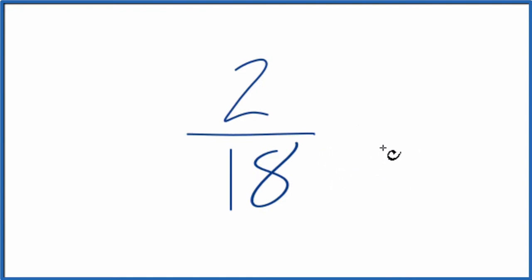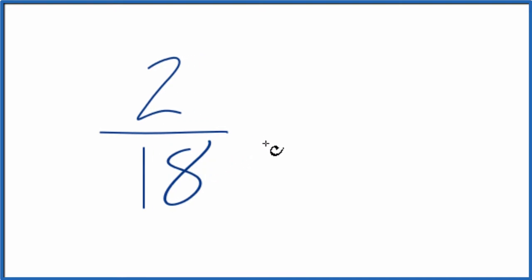We need to find a common factor, something that goes into 2 and 18. I know that 2 goes into 18 nine times, so I'll divide the numerator by 2 and the denominator by 2. 2 is our common factor, and that should simplify 2/18.